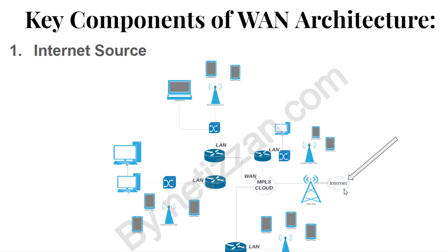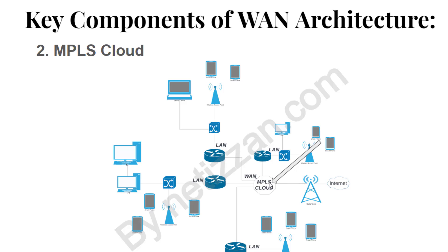The next component is an MPLS cloud. MPLS stands for Multi-Protocol Label Switching. It is a packet forwarding technology that is an alternative to IP routing. It helps in forwarding packets from one router to another. MPLS is used because it has improved speed and provides a secure network. MPLS is a very broad topic — I will do a video on that later, so consider subscribing to be notified when I upload that video.